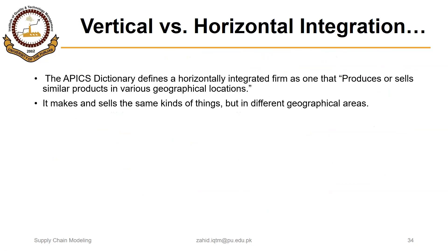Now, horizontal integration is slightly tricky. If an organization produces or sells similar products in various geographic locations, that is horizontally integrated — it makes and sells the same kinds of things but in different geographic areas. In simple words, if an organization makes similar products that it was not making before and thereby expands its market share, that is moving in the horizontal integration direction.